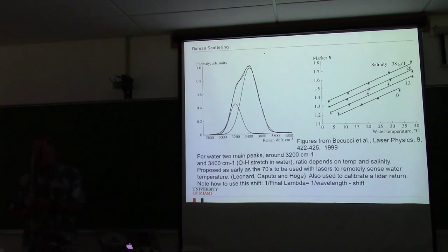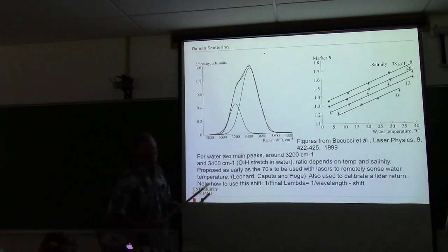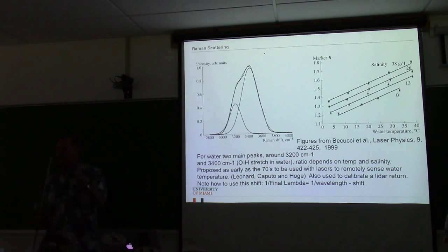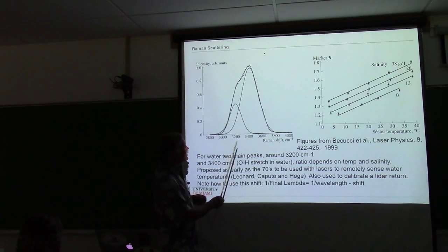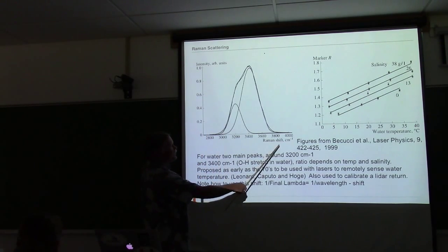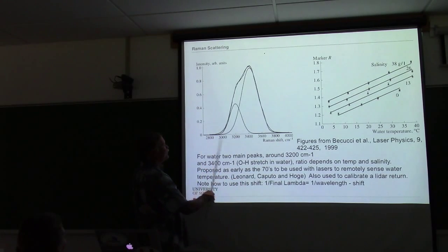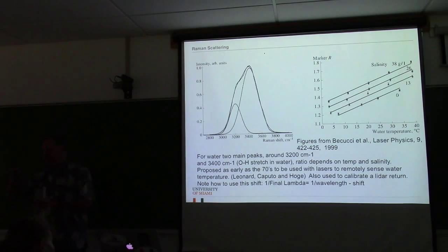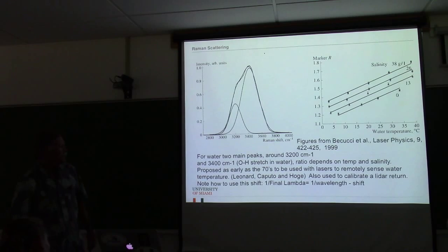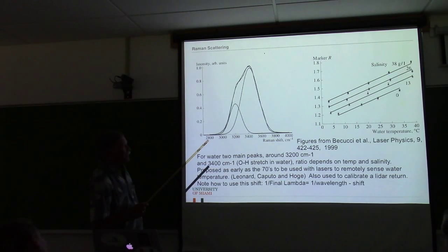For Raman scattering there are two main peaks. I showed you it's an energy difference that's constant. If you work in units of inverse centimeters — which is proportional to energy since E is proportional to hc over lambda — and look at the Raman shift, there's a peak around 3,200 and a peak around 3,400 inverse centimeters. Those two peaks vary depending on the temperature of the material. It's an OH stretch in water.